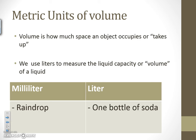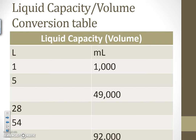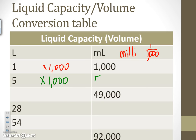Now let's talk about volume. Volume is the amount of space an object occupies or takes up. We use liters to measure the liquid capacity or volume of a liquid. A milliliter is about a raindrop — really small — but a liter is a bottle of soda, much bigger. If I wanted to go from liters to milliliters, we multiply by 1,000. So 3 liters is 3,000 milliliters. If I did 5 times 1,000, I would get 5,000 milliliters — so 5 liters equals 5,000 milliliters.